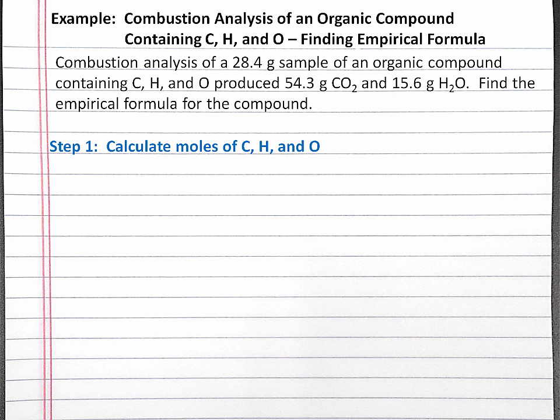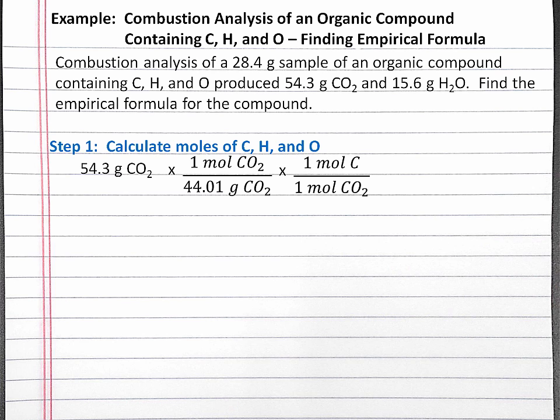Our first step will be to calculate the moles of carbon, hydrogen, and oxygen. In this problem, we assume that all of the carbon in our organic compound is incorporated into the 54.3 grams of carbon dioxide. So we begin our dimensional analysis with 54.3 grams of carbon dioxide, convert into moles of carbon dioxide using the molar mass, and then into moles of carbon using the ratio from the chemical formula, and we'll get 1.23 moles of carbon.